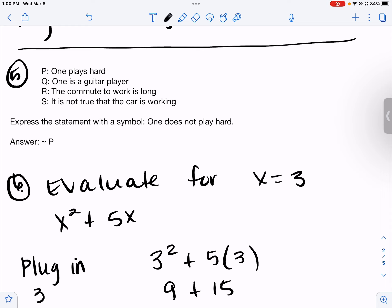Number five: P is "one plays hard," Q is "one is a guitar player," R is "the commute to work is long," S is "it is not true the color is working." Express the statement with symbols: "one does not play hard." Well, that's the opposite of P, so that squiggly line means the opposite, the negation. So the answer is the squiggly line P, or ~P.